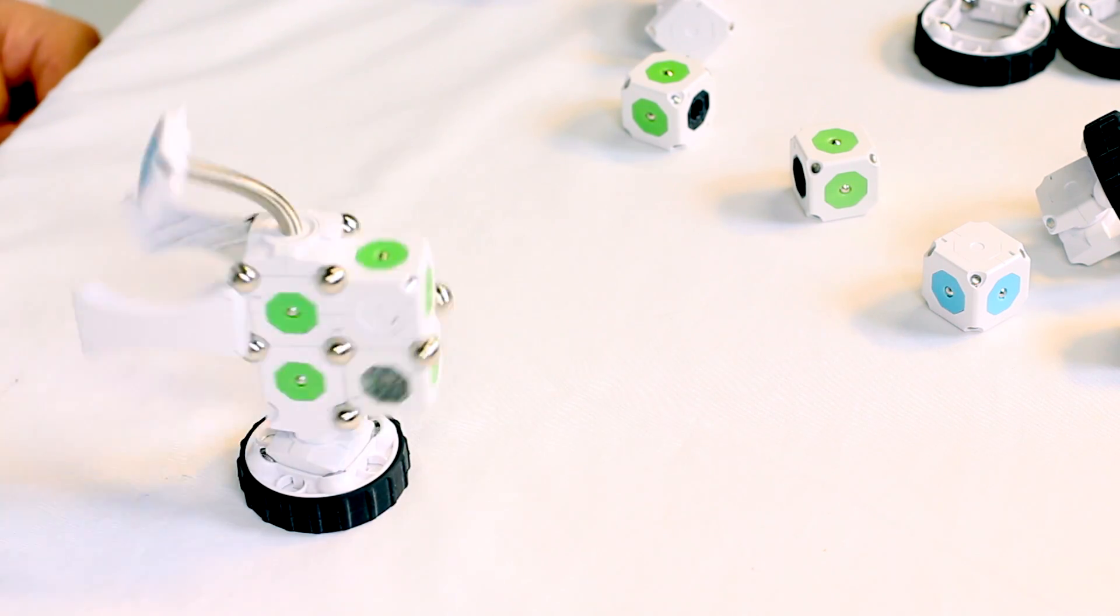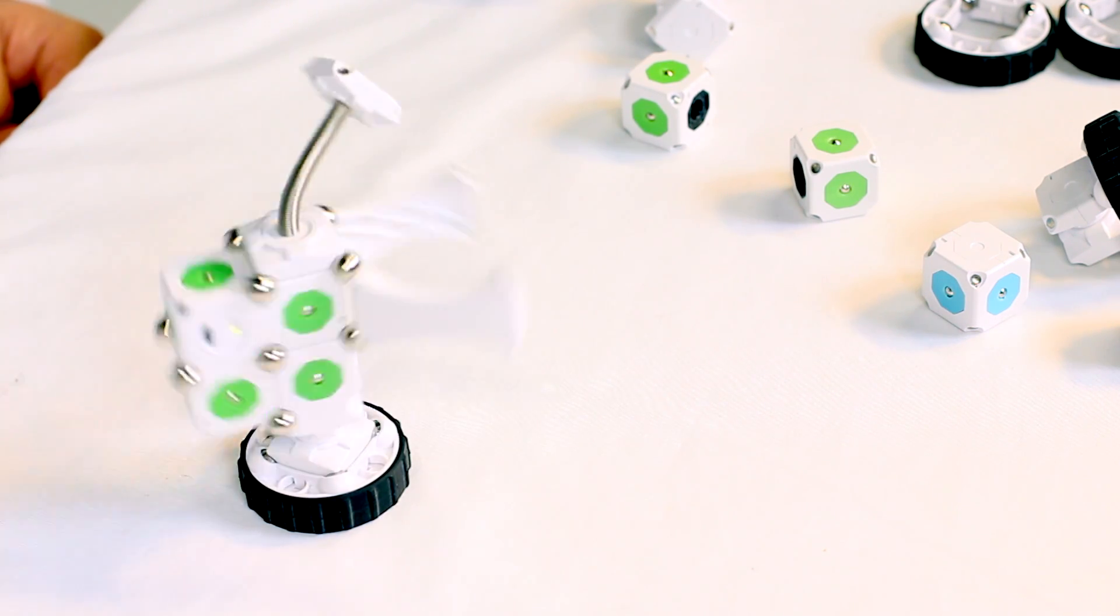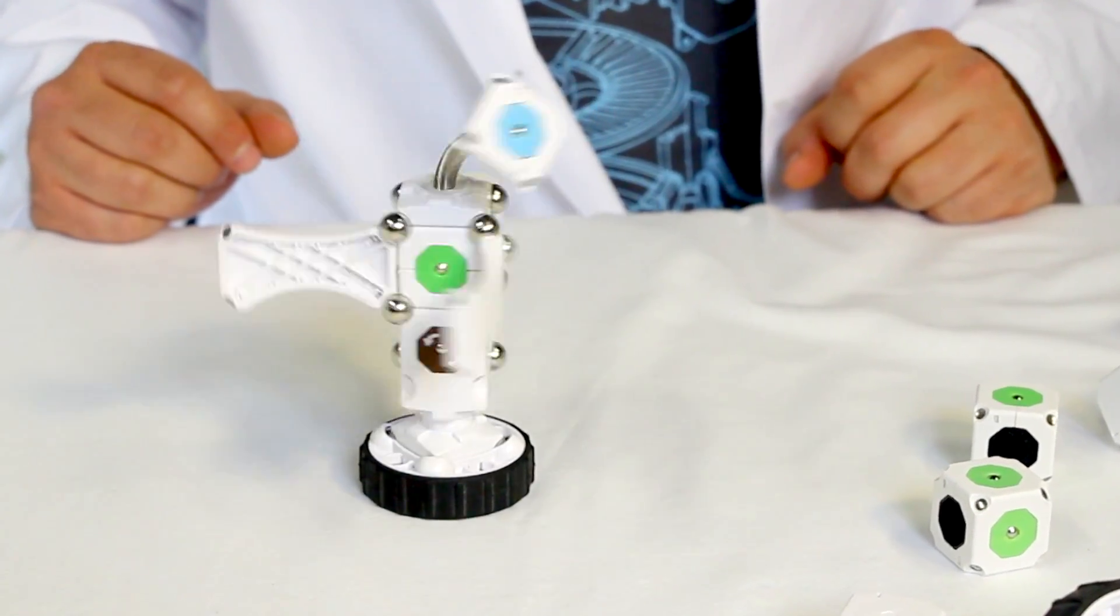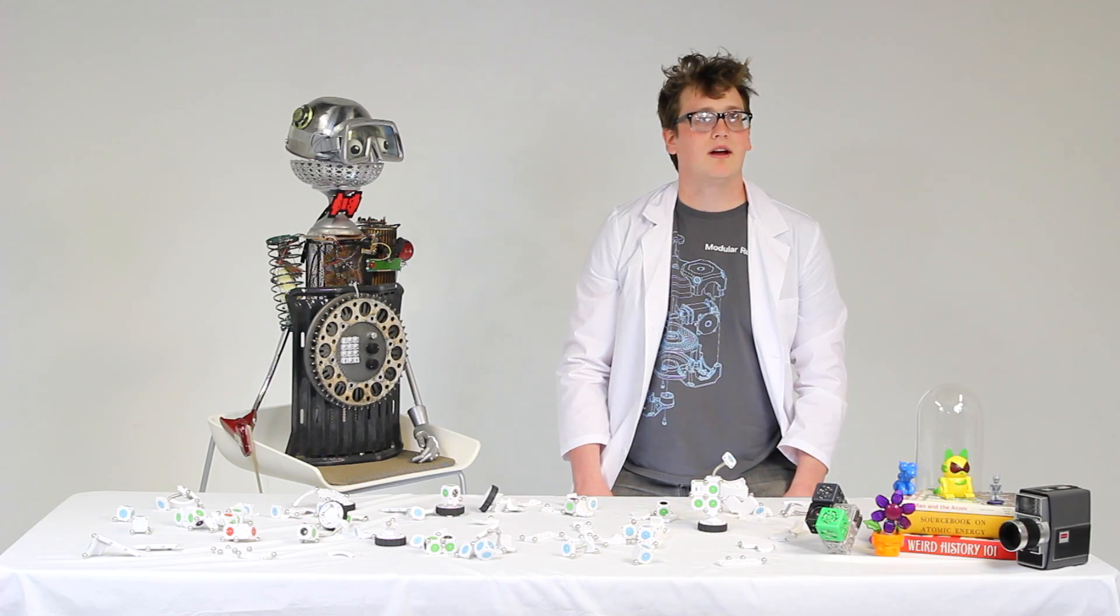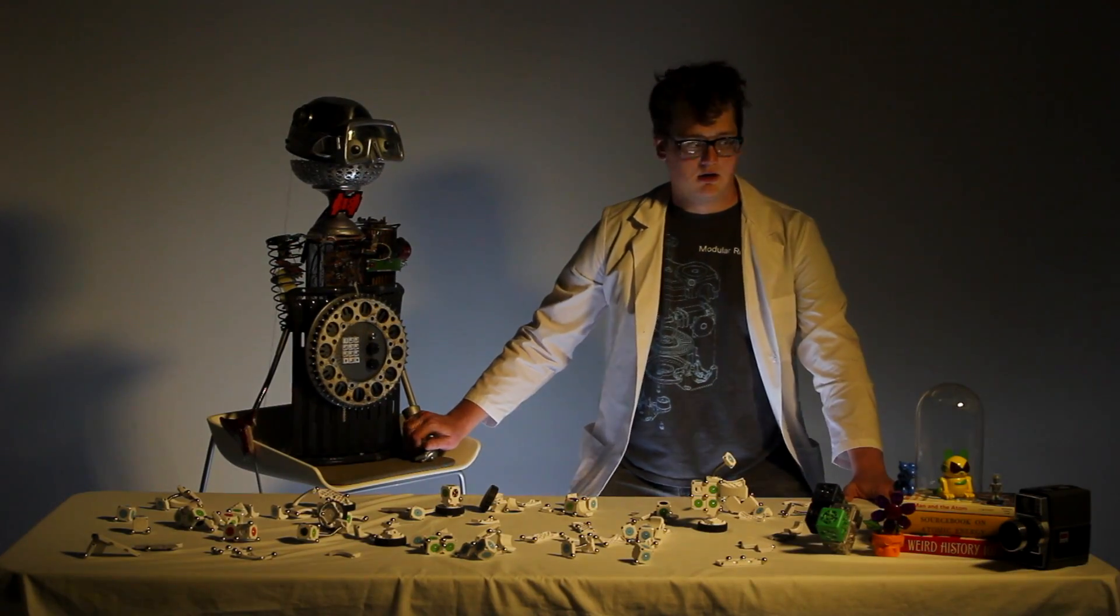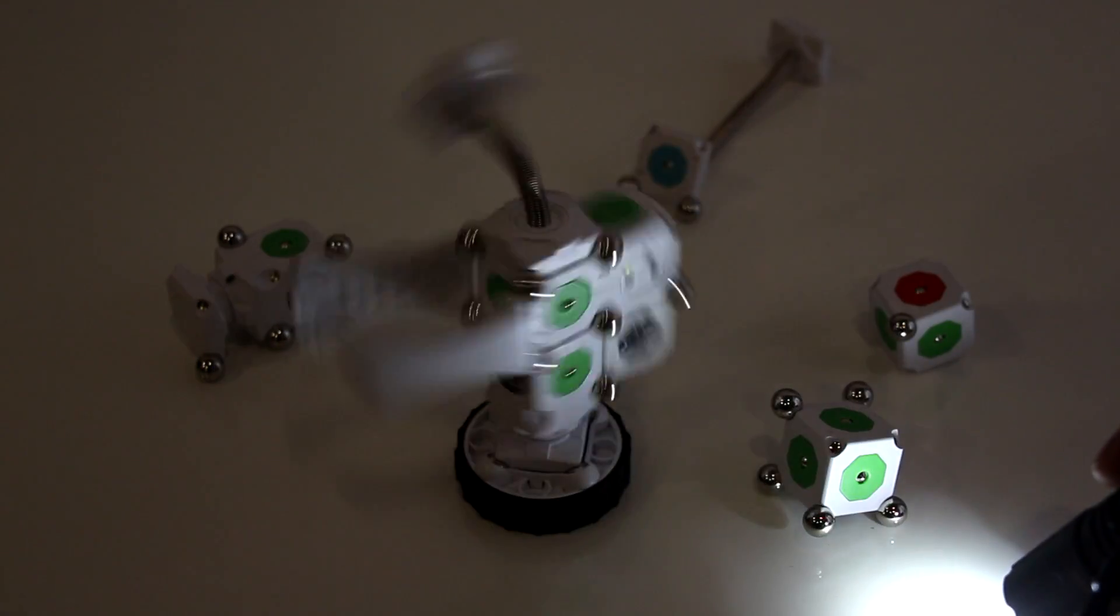This amazing robot uses a motor controlled by a brightness sensor to make it spin and change directions. For best results, turn down the lights, grab a flashlight, and watch its movements change.